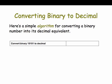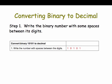So let's convert binary 1 0 1 0 1 into decimal. Step 1: Write the binary number with some spaces between its digits. So I've written 1 0 1 0 1 in the right column.